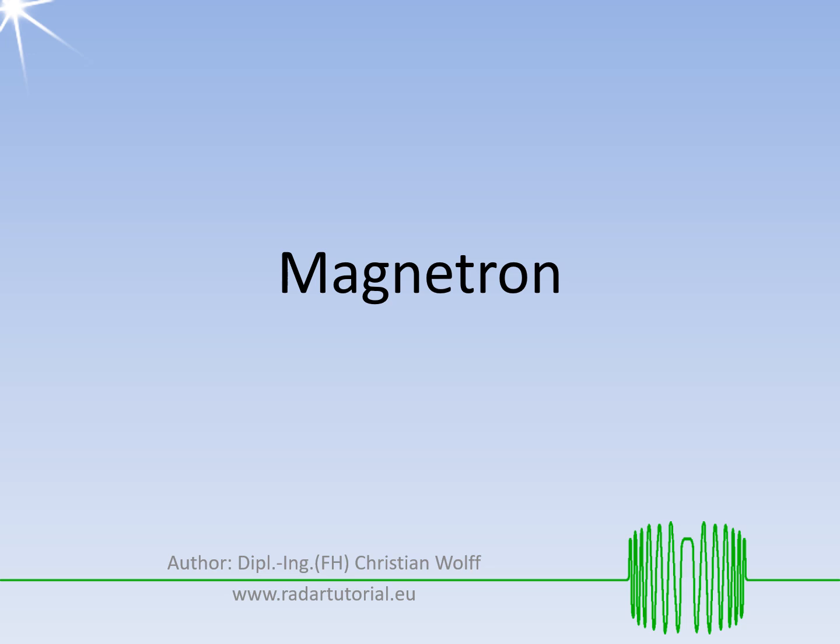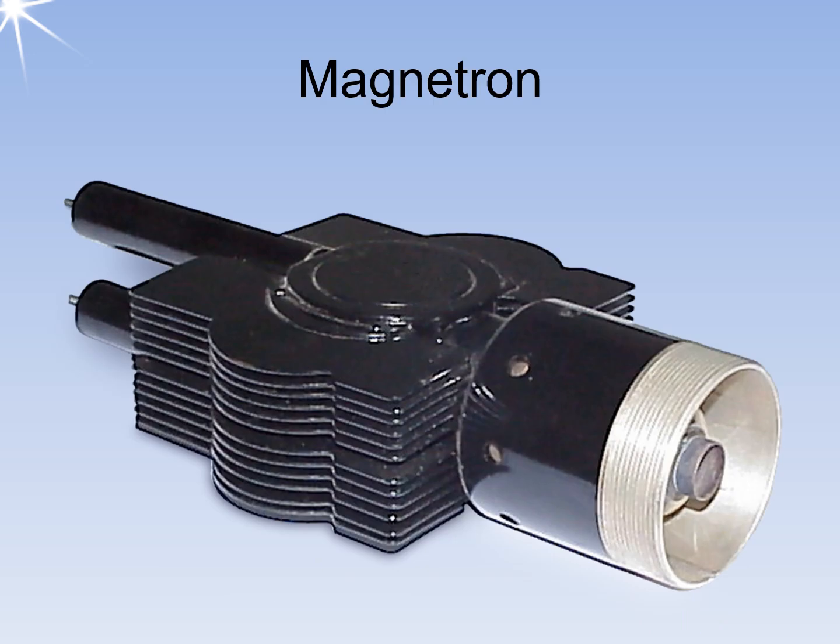This video explains the design and mode of operation of a magnetron. Magnetrons are still in use in some radar sets. They are low-cost and highly efficient generators that can operate at a frequency range of 1 to 95 GHz.